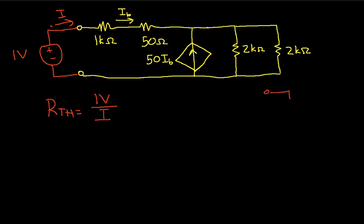My Thevenin equivalent resistance will be the one volt divided by this current. Just to make sure it's clear, the Thevenin equivalent circuit, since I have no independent sources, it's just going to be a single resistor. So all we need to do is figure out what the current is when I apply this one volt source.